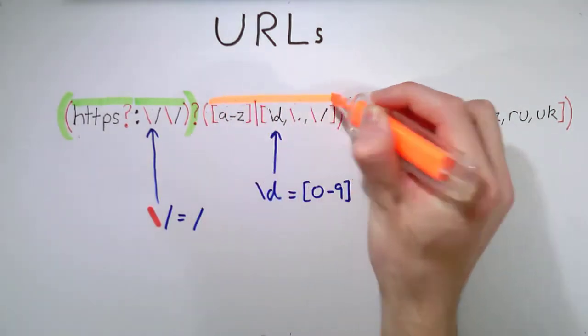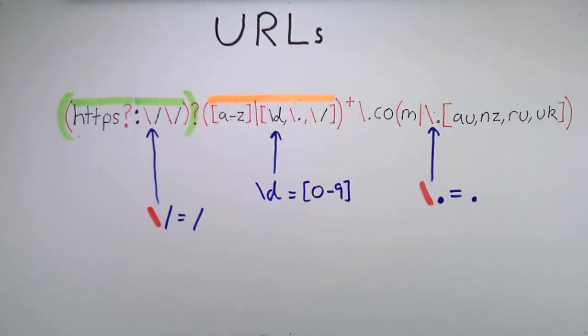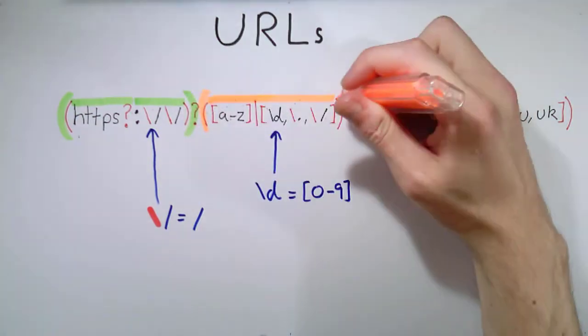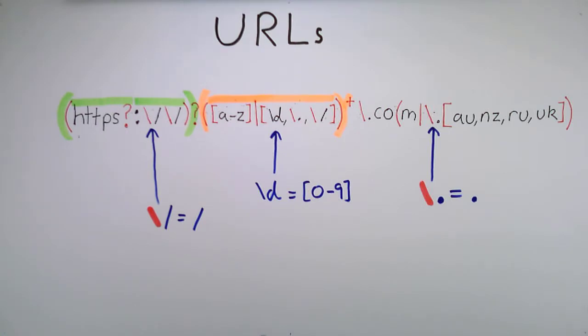The next sequence, the main web address, is a combination of characters and symbols. We have a choice between a letter or a digit or a period or a hyphen or a forward slash, but we almost certainly need more than one, so it is wrapped in parentheses and given a plus symbol.